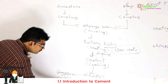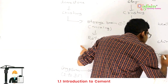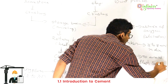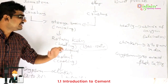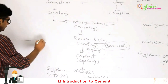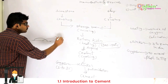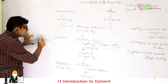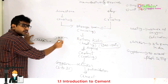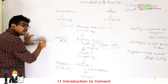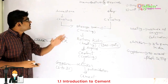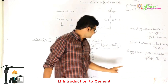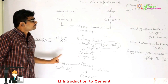The purpose of adding 2 to 3 percent gypsum is to avoid flash setting. For example, if concrete is mixed at one location and must be transported 10 kilometers away, it should not set immediately after mixing. That is why cement should not be subjected to flash setting. Remember: gypsum is added to avoid flash setting, and the percentage of gypsum added is 2 to 3 percent.